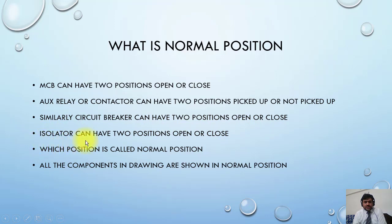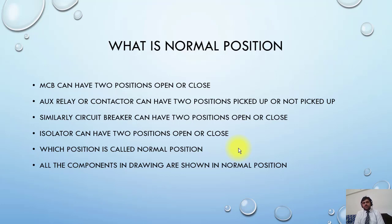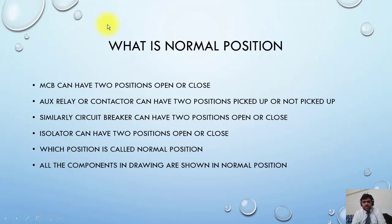An isolator can have two positions: open or closed. All components in drawings are shown in normal position. To repeat: all items, devices, and contactors are shown in normal position in the drawing. The isolator's normal position is open, the breaker's normal position is open, and the contact's normal position is de-energized.